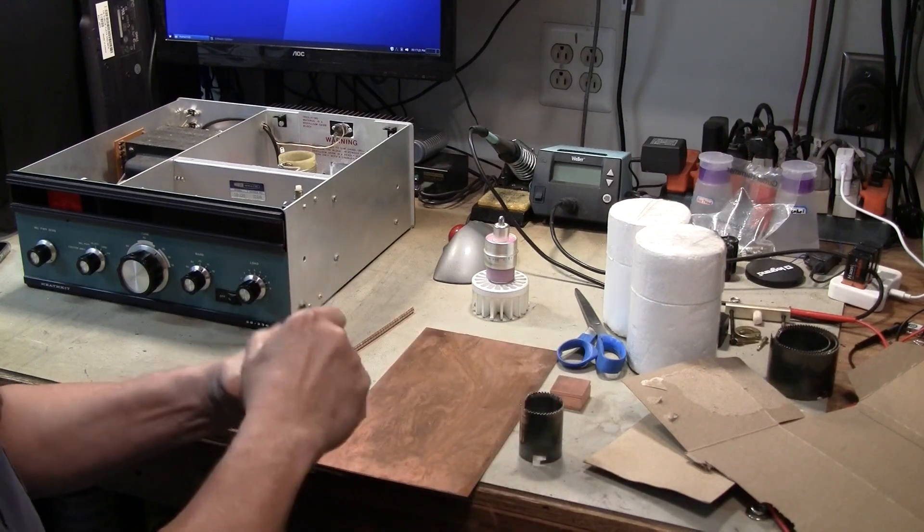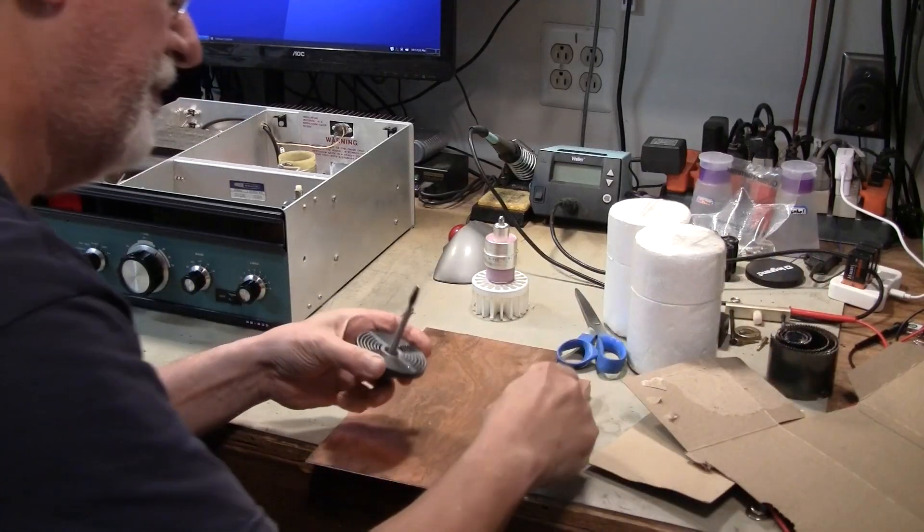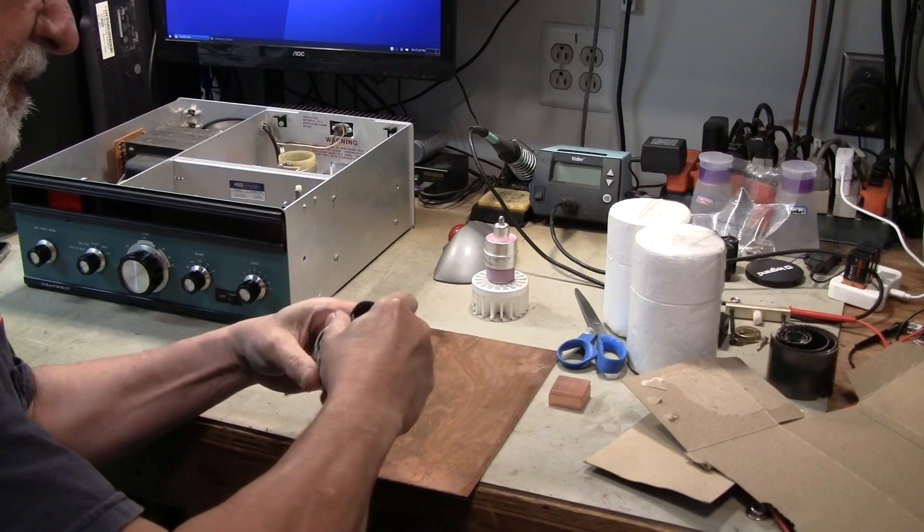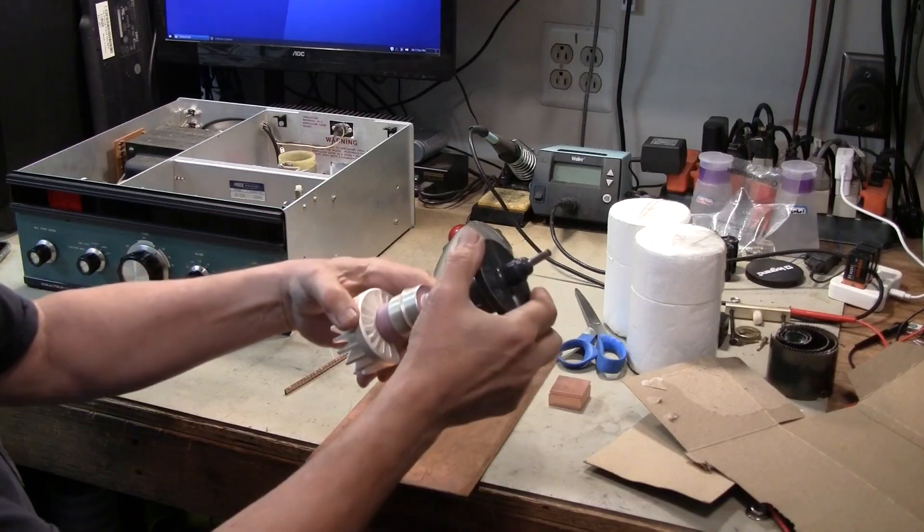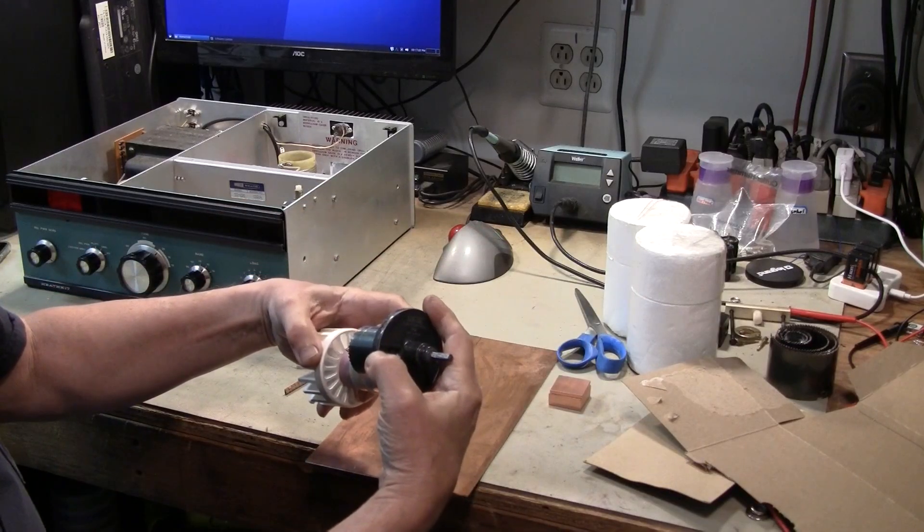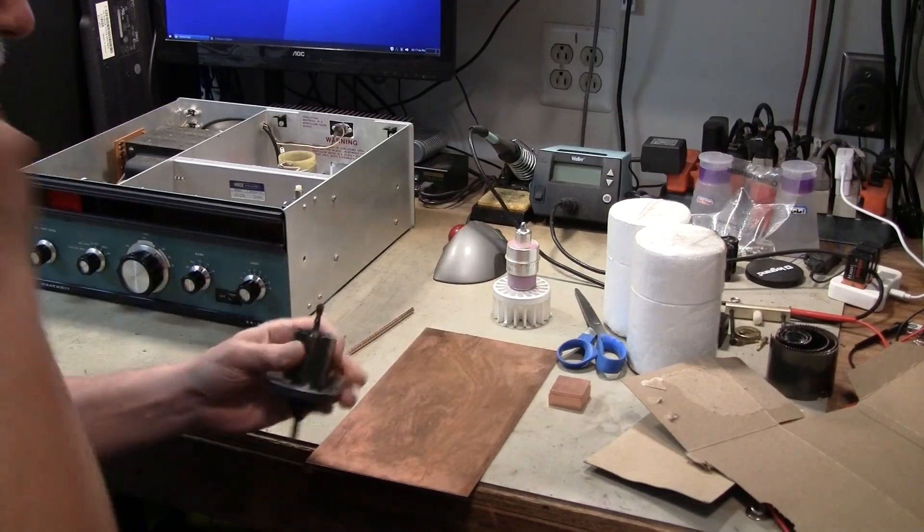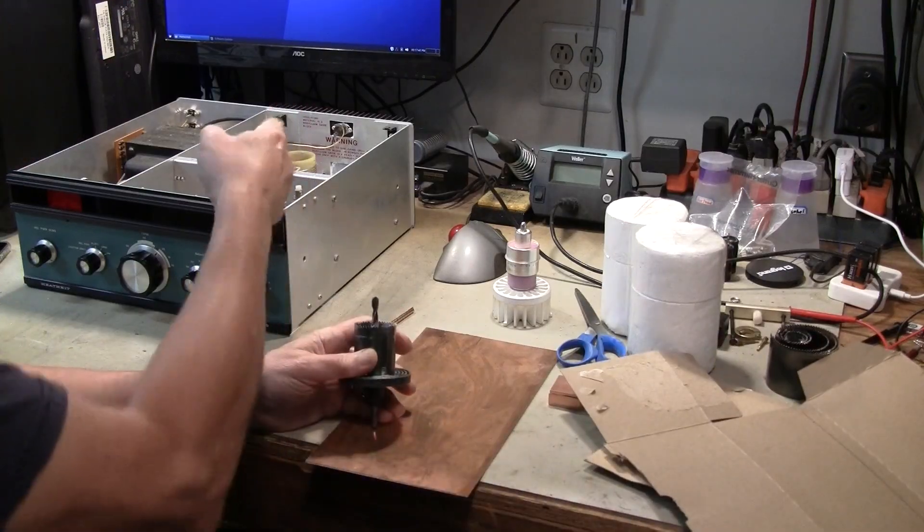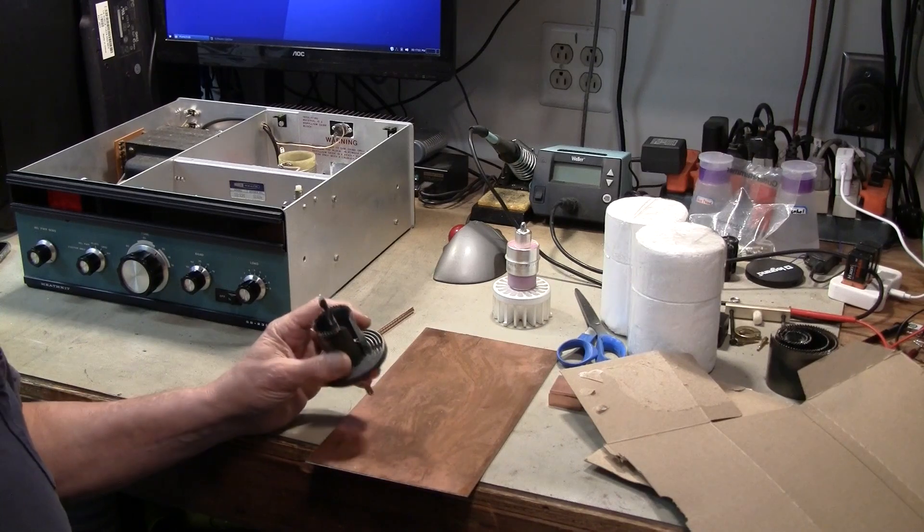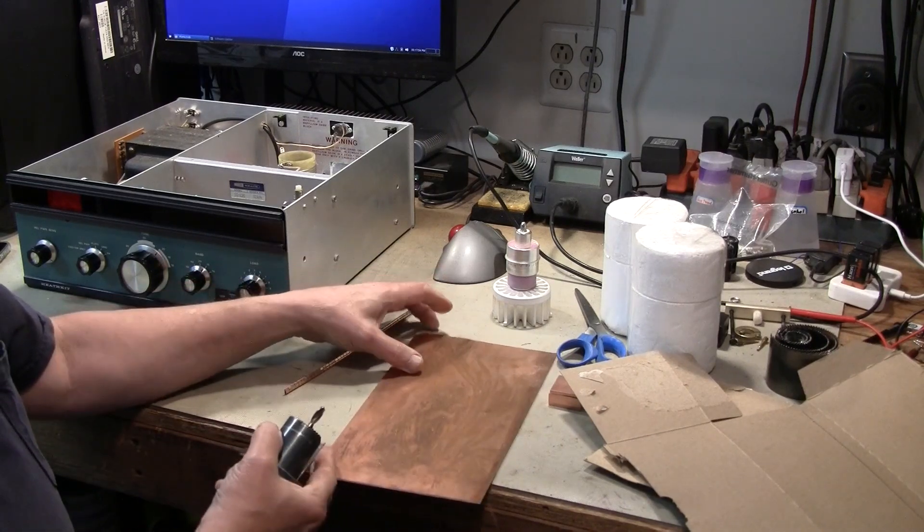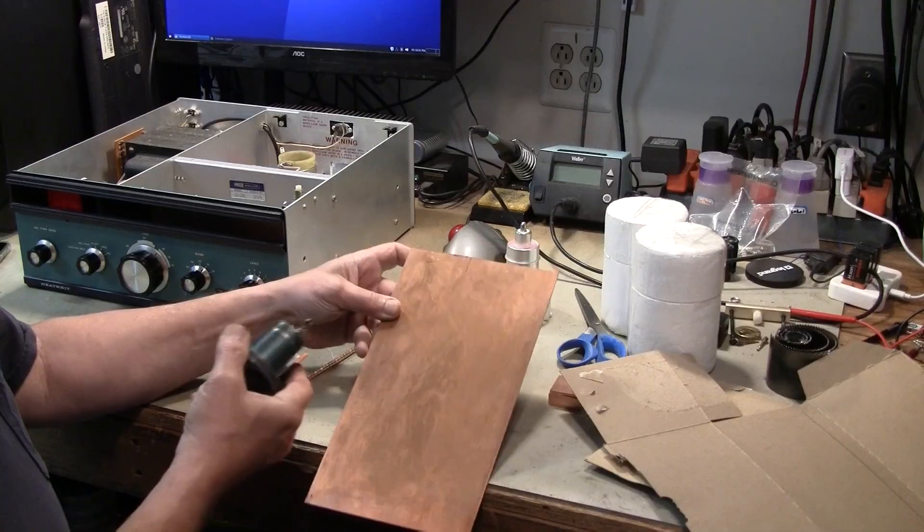So that's the one that I need. These are the ones that I don't need. That's definitely the one that I need. So we'll start with the cardboard, fit it into place inside the cabinet of the SB 230. And then I'll cut out the squares from the copper and start drilling them out and putting them together.